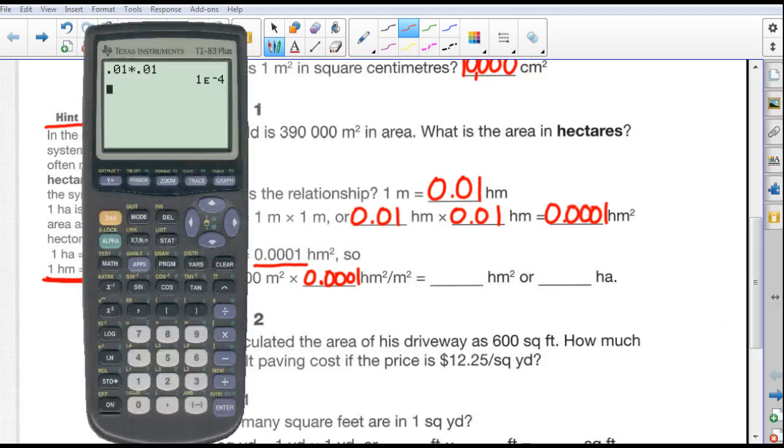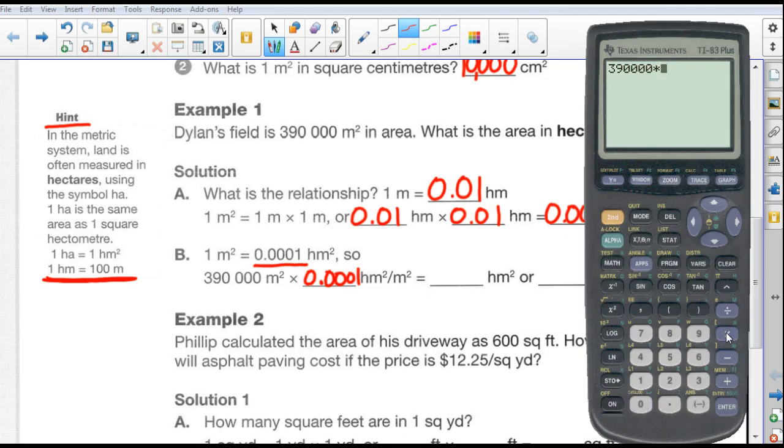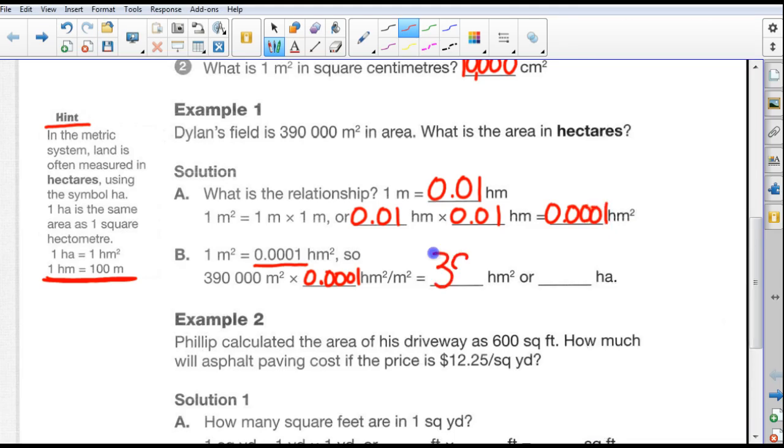Okay, so one meter squared is 0.0001 hectometers squared. So 390,000 meters squared times 0.0001 hectometers squared per meter squared is equal to. So we'll just take our calculator and we have 390,000 times 0.0001 equals 39. So we have 39 hectometers squared. And we know that from over here, 1 hectometer squared is 1 hectare. So 39 hectometers squared is the same as 39 hectares.